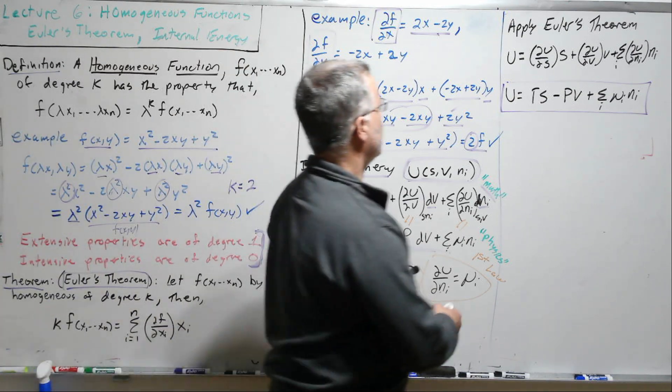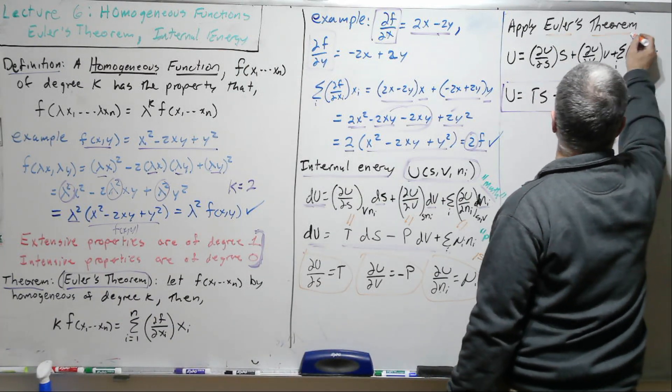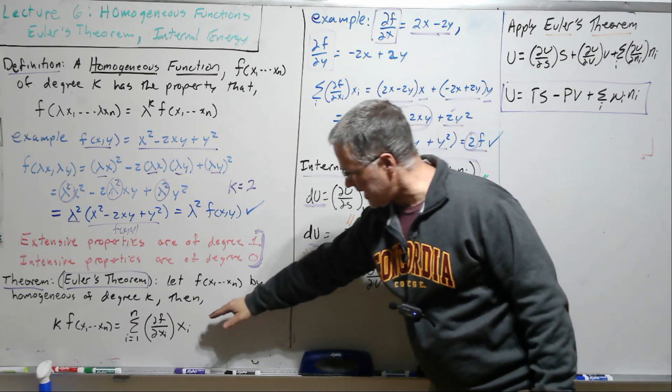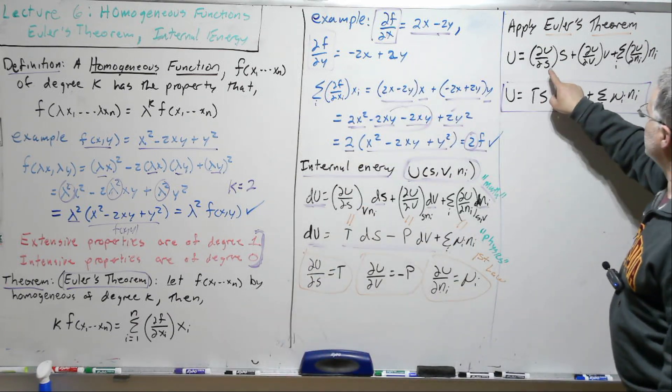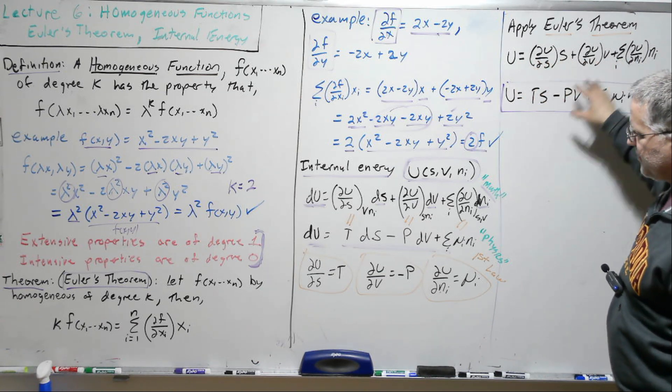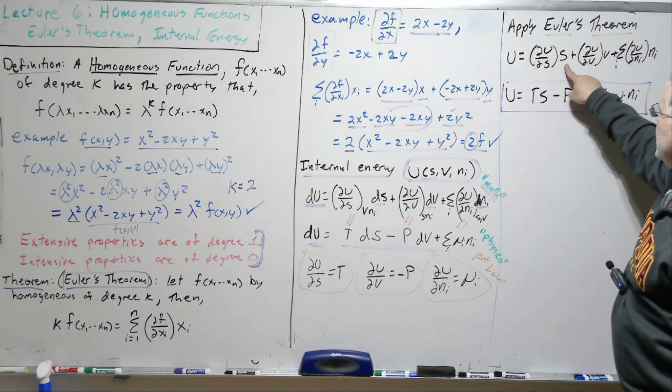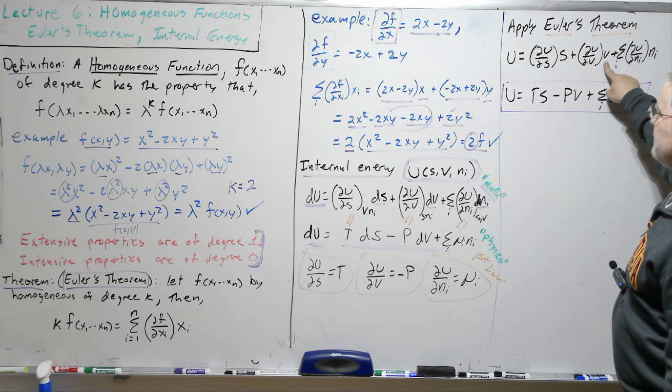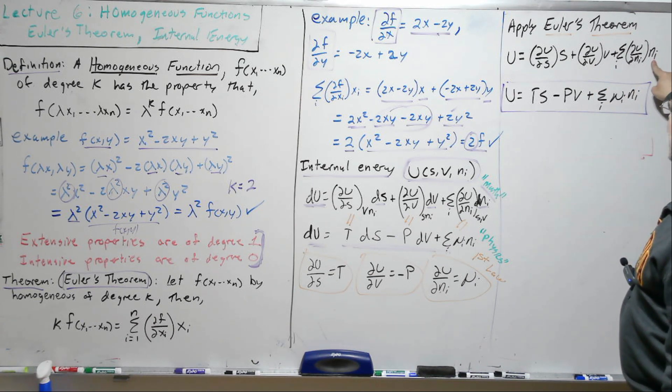So now let's apply Euler's theorem. And so we'll do the right-hand side. dU/dS, S. So not a differential form now. This is not the differential form. dU/dS, S. dU/dV, V. dU/dN, N.